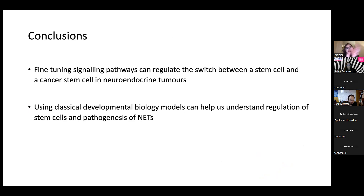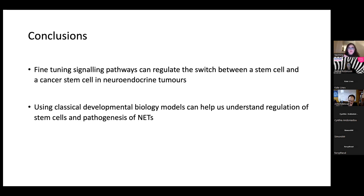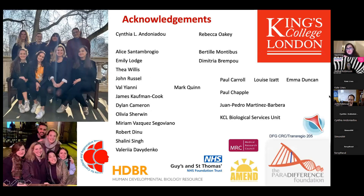My main take-home message today is that signaling pathways present in development need very fine tuning, as they can really be the switch between a stem cell and a cancer stem cell in neuroendocrine organs. By using developmental biology, we can understand the regulation of stem cells and how they can play a role in the pathogenesis of neuroendocrine tumors. Thank you for listening, and thank you to everyone involved in these studies, especially my mentor Cynthia, all our collaborators, and the NET Cancer Foundation for their invitation.